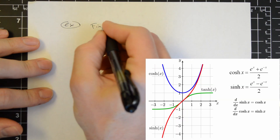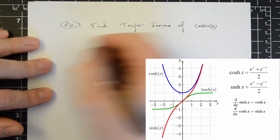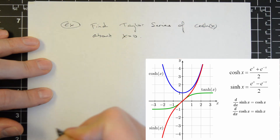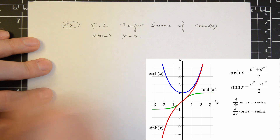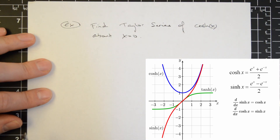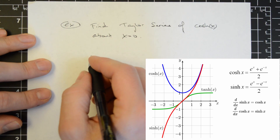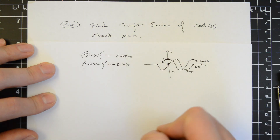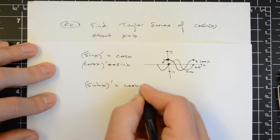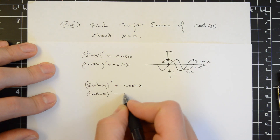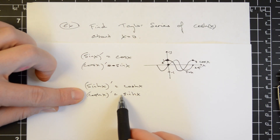Let's study another example. Find the Taylor series of cosine of x about x equals 0. Another way to ask this question would be: find the Maclaurin series of cosine of x. The hyperbolic cosine function shares similar behavior with cosine at the origin. The derivative of sinh of x is cosh of x, and the derivative of cosh of x is sinh of x. Hence, the derivatives are similar, but no minus sign is introduced when differentiating hyperbolic cosine.